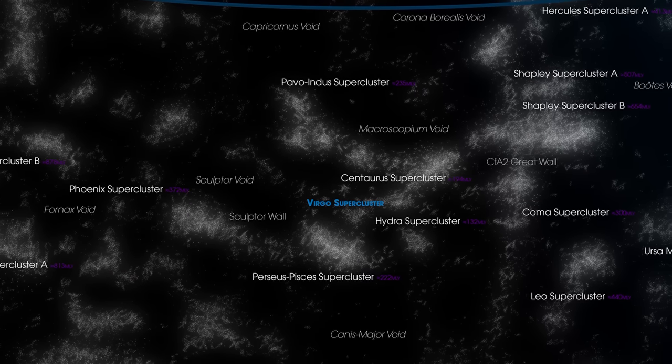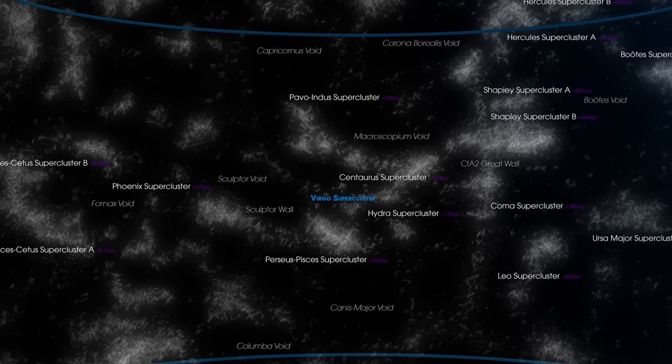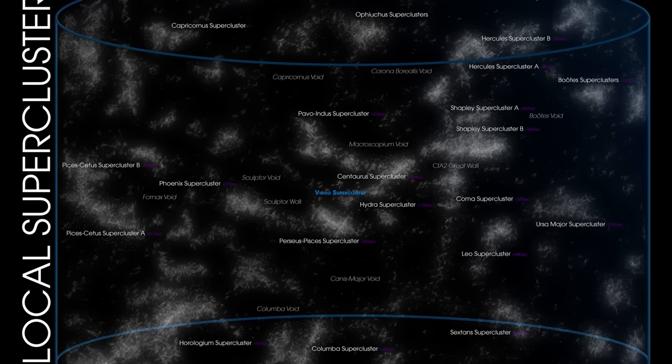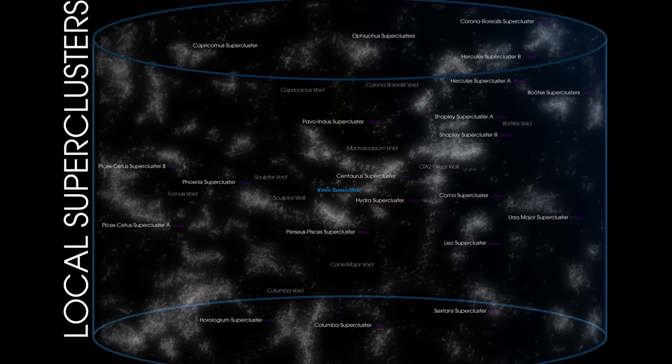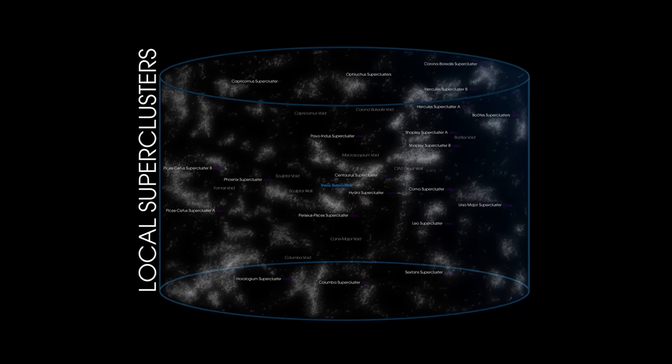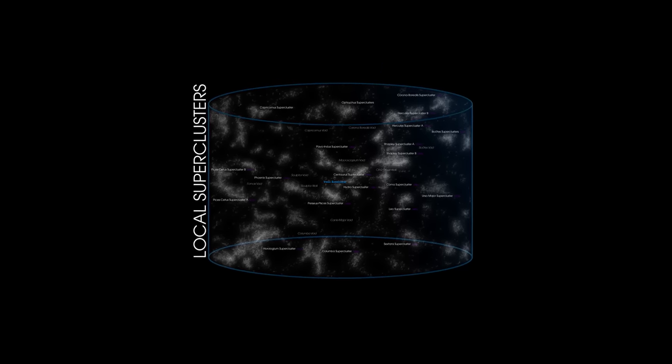In this vast expanse, our Milky Way, the entire local group, and even the Virgo Supercluster are just tiny components of this gigantic structure. Laniakea provides a profound context for our existence. In this immense supercluster, we are part of something far greater and more majestic than we can fully comprehend.